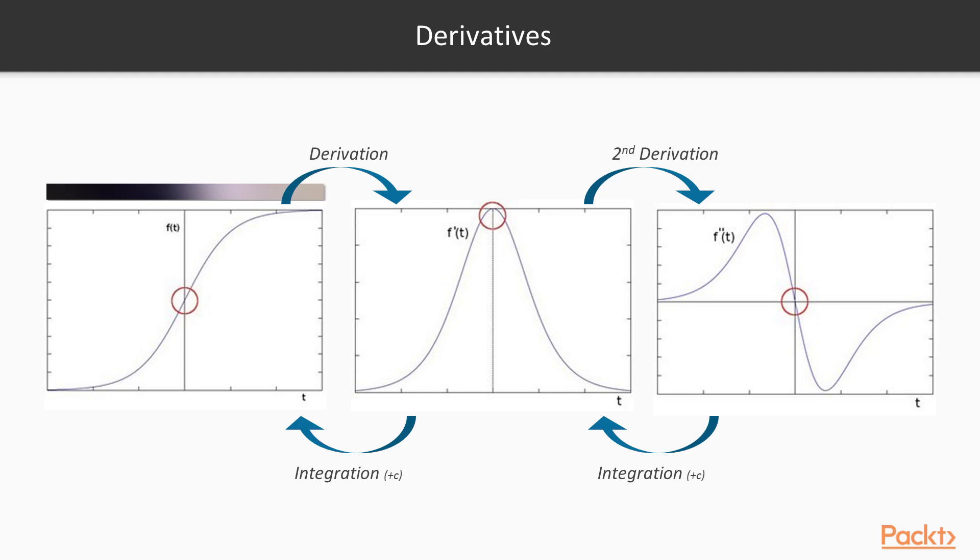Recall that a one-dimensional function's derivative indicates the change of the function values as its parameter changes. For example, consider a smoothly increasing step function on the left. Its derivative will peak at the point of maximum change as can be seen in the center plot. Taking the second derivative, that is, the derivative of the derivative, as seen on the right, creates what's called a zero crossing at the first derivative peak, which corresponds exactly to the center of the edge on the left.